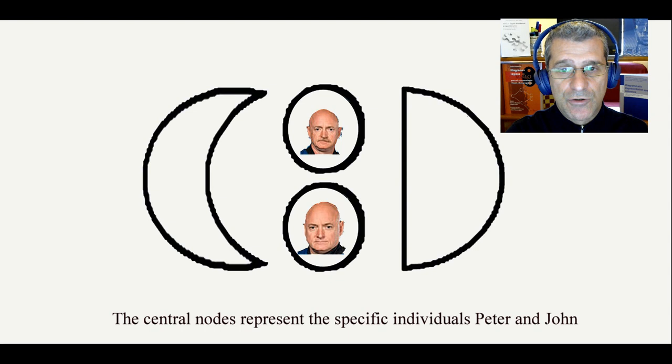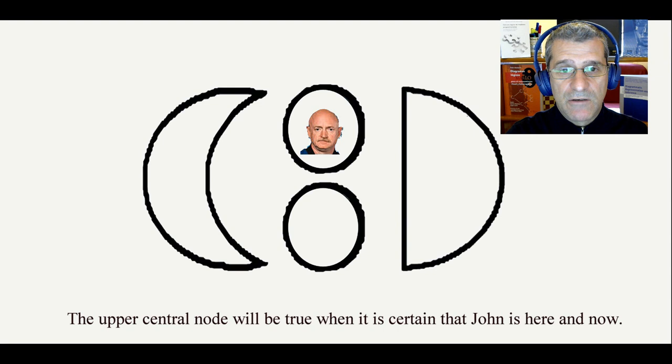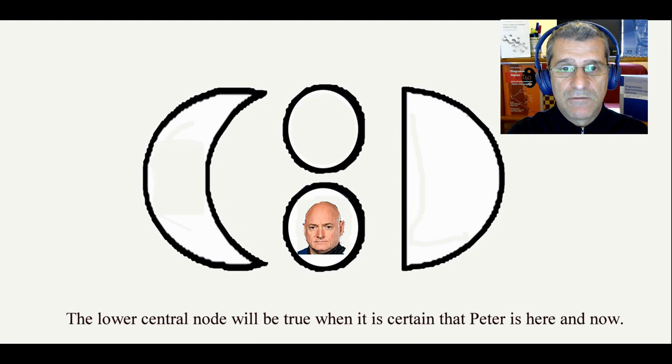The central nodes represent the specific individuals, Peter and John. The upper central node will be true when it is certain that John is here and now. The lower central node will be true when it is certain that Peter is here and now. The AND node will be true when it is certain that both are here and now.